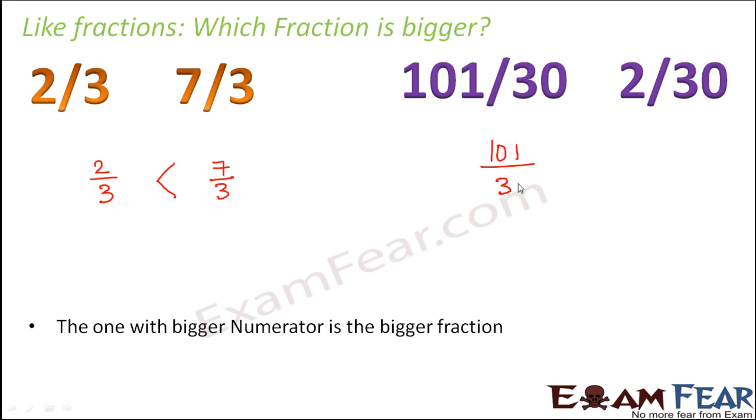Let's look at the second example. 101 divided by 30 and 2 divided by 30. So denominators are same. They are like fractions. Numerator 101 is definitely bigger than 2. Therefore 101 by 30 is greater than 2 by 30. Pretty simple right?